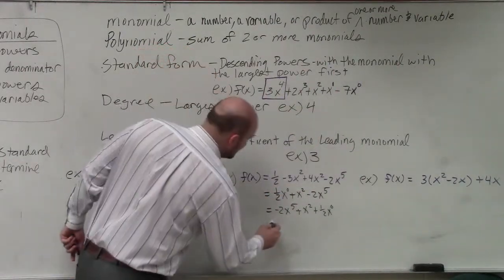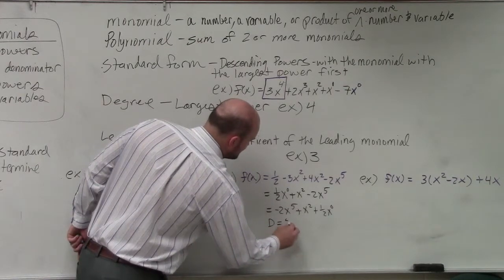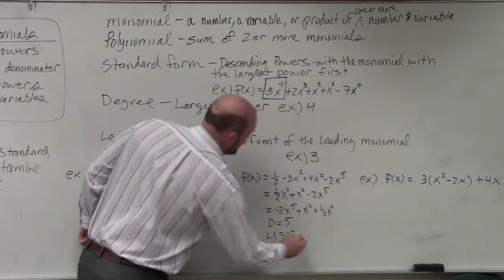But now it's in descending order. So I can quickly identify my degree, which is 5, and my leading coefficient is negative 2.